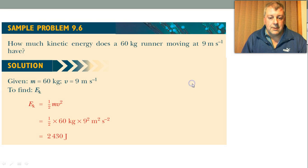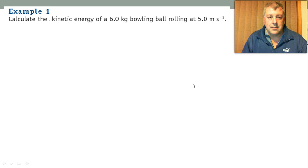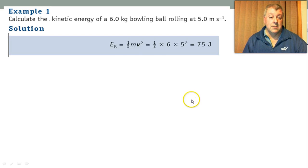So let's have another one. Calculate the kinetic energy of a six kilogram bowling ball rolling at five meters per second. EK equals half mv squared. Put the numbers in. 75 joules.